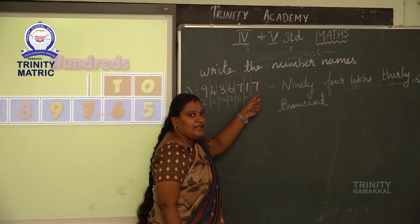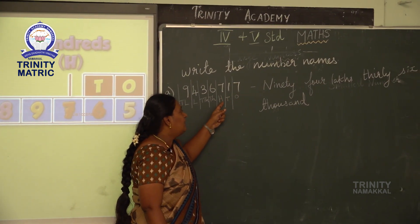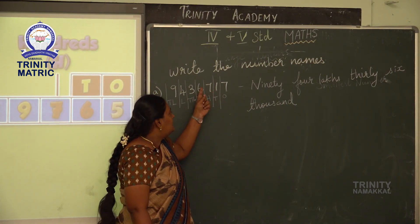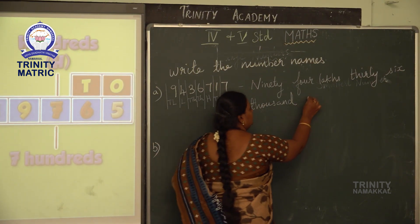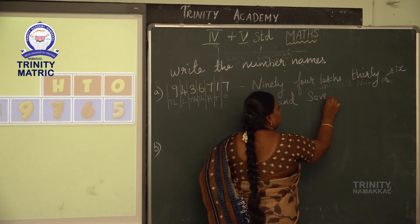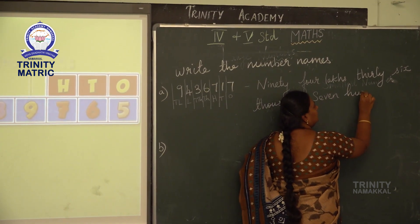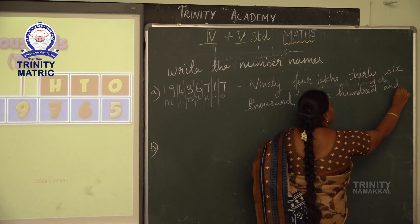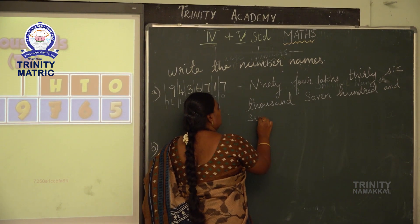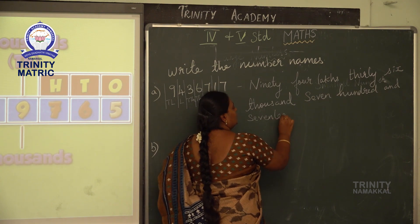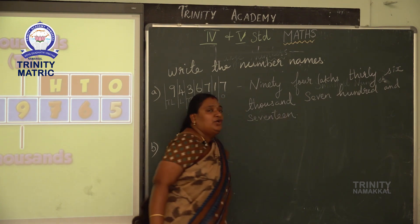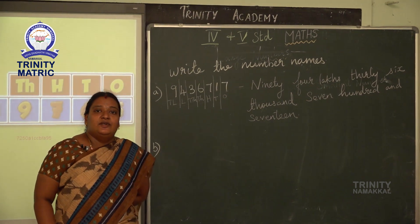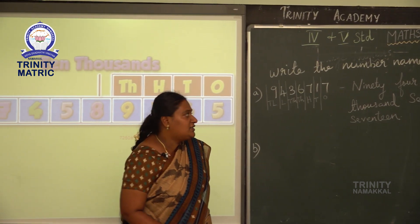Then 1s, 10s, and 100s belong to the units family, so we have to write 717. Without any spelling mistake, you have to write the number names. These number names will be worth 3 marks and 2 marks in your exam.